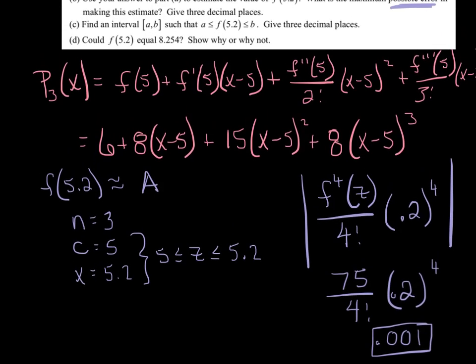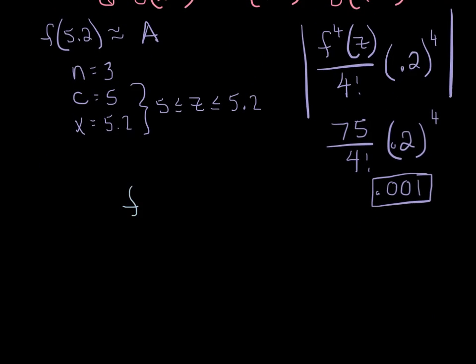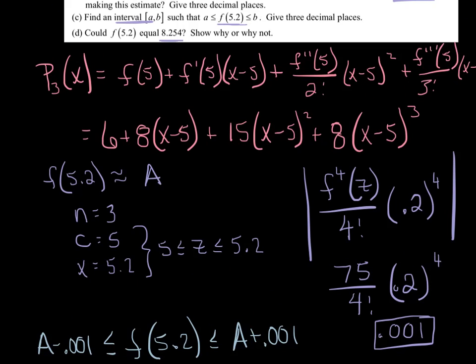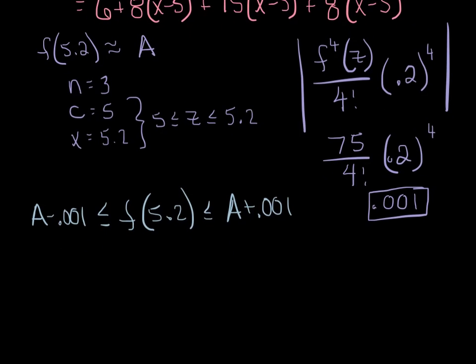Let's look at the last couple pieces here. Similar to the last problem, they said can you find an interval within which f of 5.2 is guaranteed to fall within? We're going to say that f of 5.2, the real value, has got to be within A plus 0.001, and on the other end, A minus 0.001. I don't quite have the A in front of me, so adding or subtracting 0.001, I don't have that in front of me, but I think we can see where we're going with part D. They said, how come f of 5.2 can't equal 8.254? And I think you kind of know the answer to that. 8.254 doesn't fall within this particular interval right here. Either it's going to be a whisker too big or a whisker too small, and it's not going to quite fall within that interval, and so according to Lagrange's, we can guarantee that it'll never equal 8.254.